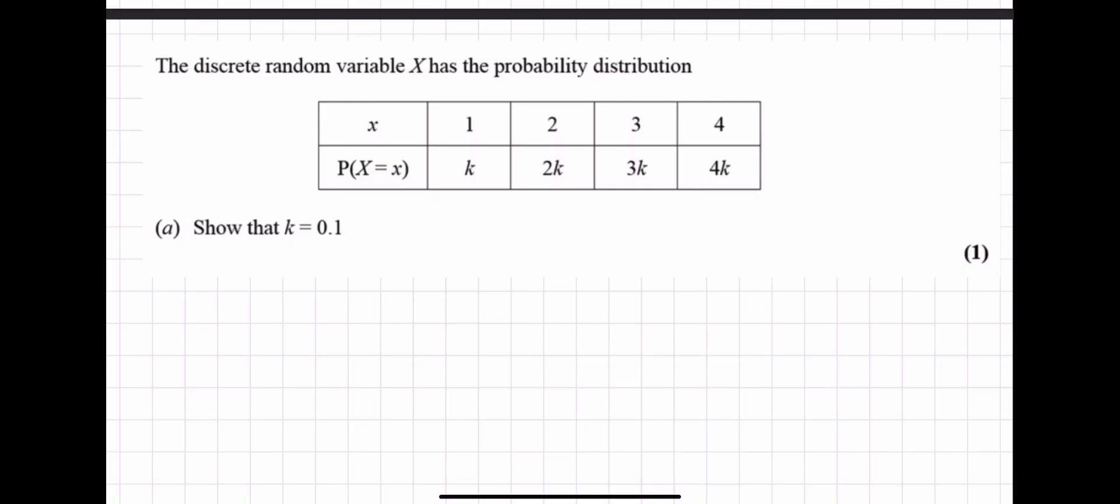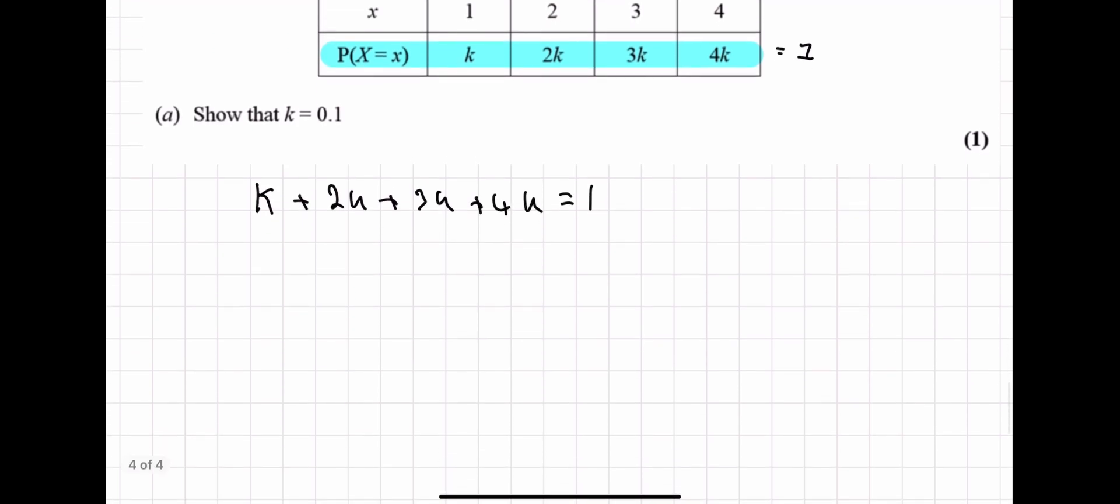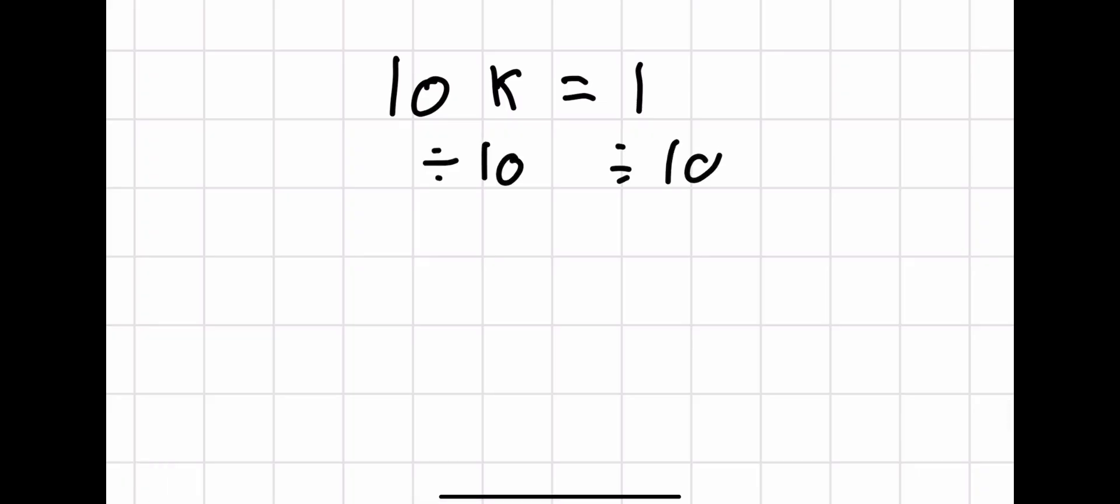Now here's an example of another question where it says show that k is equal to 0.1. Well, we know in a probability distribution, these are all the possible outcomes we can have. You can either have X equals 1, X equals 2, X equals 3, or X equals 4. That must mean the sum of these probabilities must add up to 1. So we know k plus 2k plus 3k plus 4k equals 1. k plus 2k plus 3k plus 4k is the same as 10k. So 10k equals 1. You can then divide both sides by 10. You get k equals one-tenth, which is the same as 0.1. Nothing much to it.